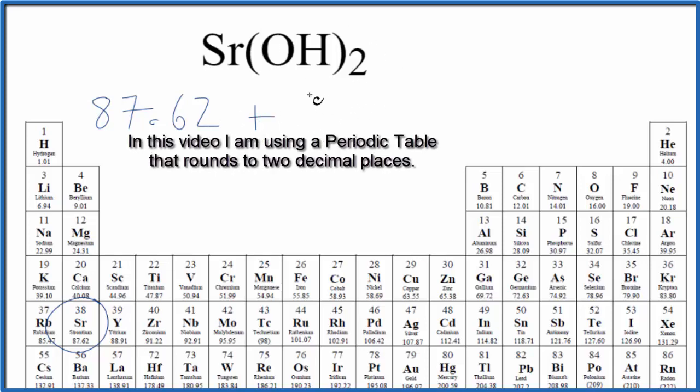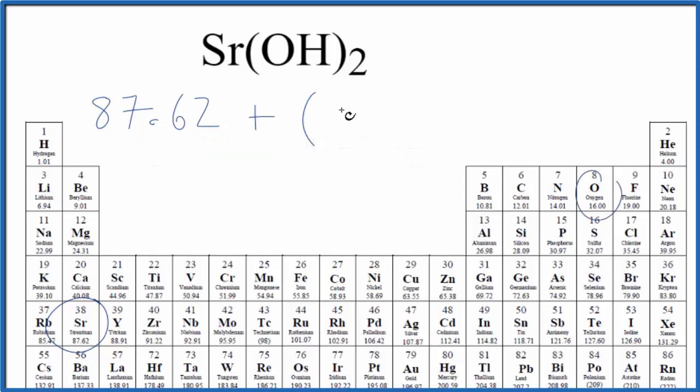Plus, and I'll use my parentheses here, oxygen is 16.00 grams per mole, and then hydrogen is 1.01 grams per mole.